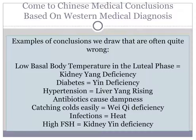The next thing we do because we don't know how to diagnose is come to Chinese medical conclusions based on Western medical diagnosis. Some examples of conclusions we draw that are often quite wrong: a low basal body temperature in the luteal phase is kidney yang deficiency; diabetes is yin deficiency; hypertension is liver yang rising; antibiotics cause dampness; catching colds easily is a Wei qi deficiency; infections are heat; and high FSH is kidney yin deficiency. These are just a few of the kinds of conclusions we draw based on a Western diagnosis.